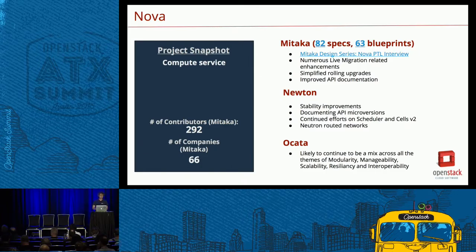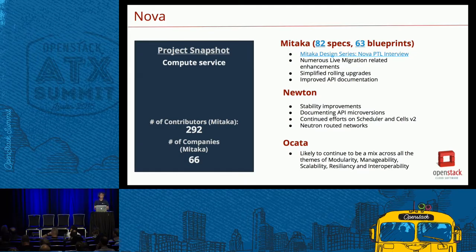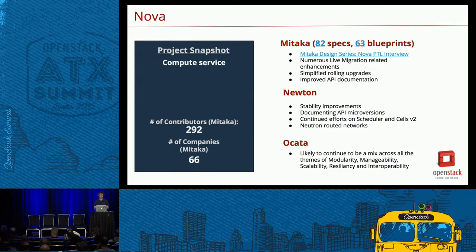Using Nova as an example — I did three of the PTL interviews, speaking to Nova, Neutron, and the docs team. These slides have a consistent theme: the description of the project on the left, with details on the right. For Mitaka, 82 specs and 63 blueprints were involved. There's also a link to the video or phone interview we did with the PTLs. In Mitaka, the focus was on migration, simplifying rolling updates, and improving API documentation. In Newton, continuing focus on stability, further documentation changes, scheduler improvements, support for Cells V2, and better interoperability with Neutron. For Ocata, the PTL John Garbutt indicated they'll be looking at all of the themes.